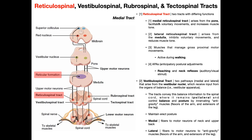The reticulospinal tract has a division of labor. The medial part, which arises from the pons level, is going to facilitate voluntary movements and increase muscle tone. For movements involving proximal musculature like the shoulder and hip girdles, if you want to cause a muscle contraction or increase muscle tone, that may be facilitated by the medial reticulospinal tract. In contrast, the lateral portion, which arises from the medulla level of the reticular formation, inhibits voluntary movements and reduces muscle tone.